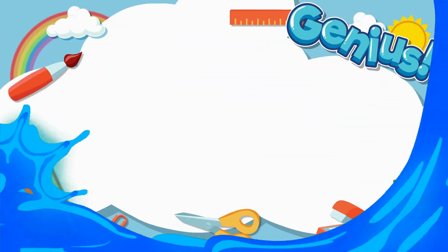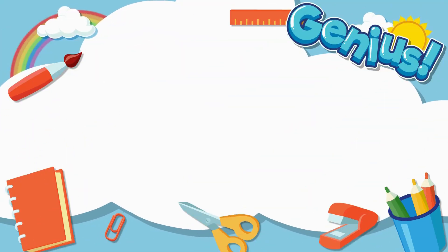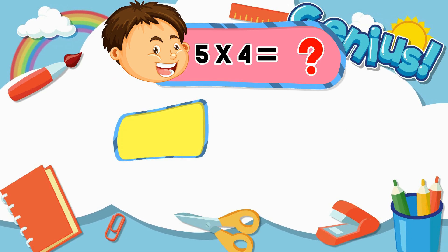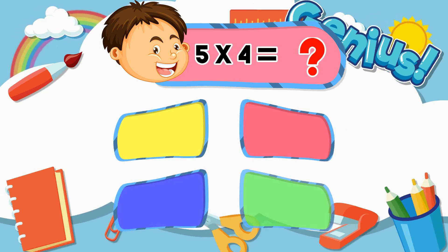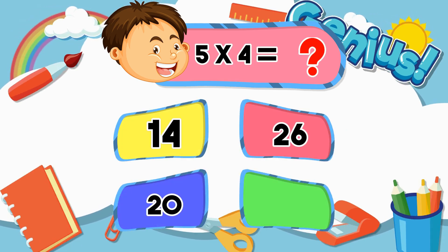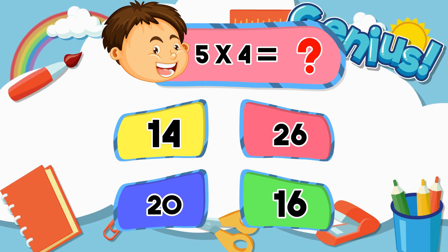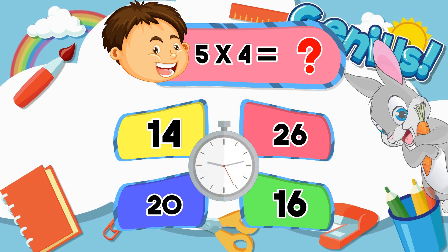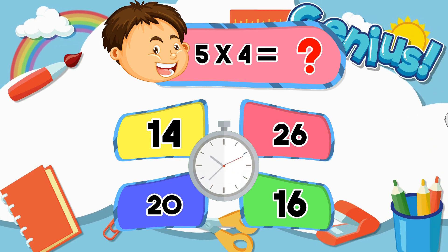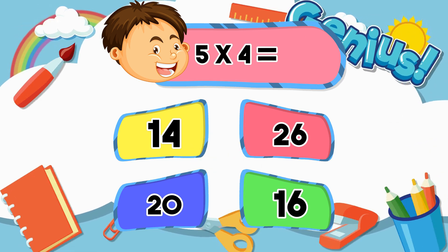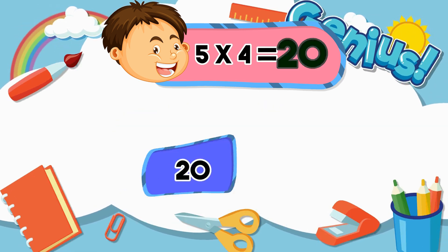What is five times four? Options: Fourteen, Twenty, Sixteen. Answer: Twenty.